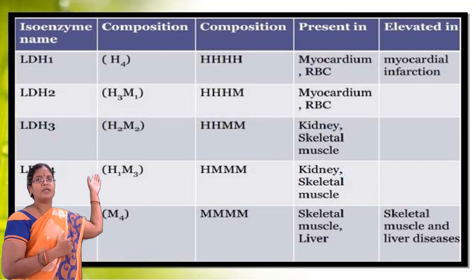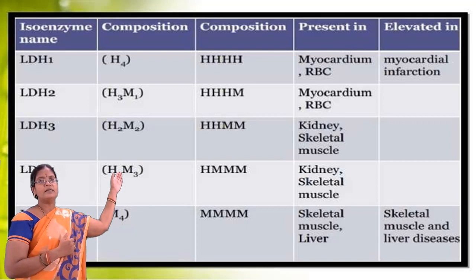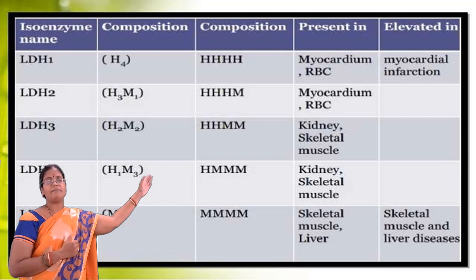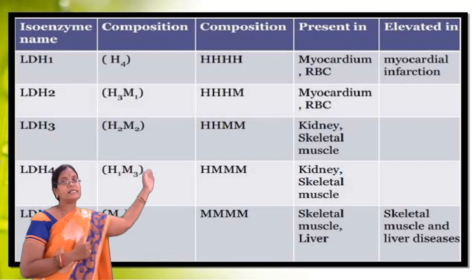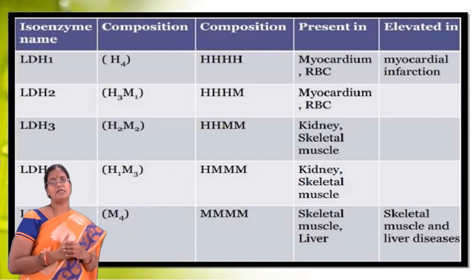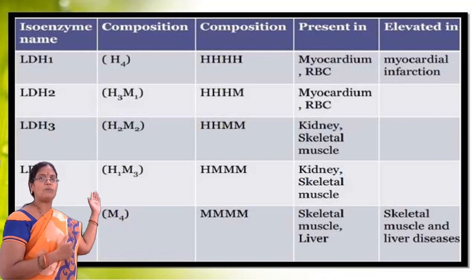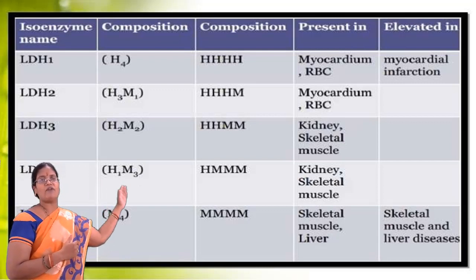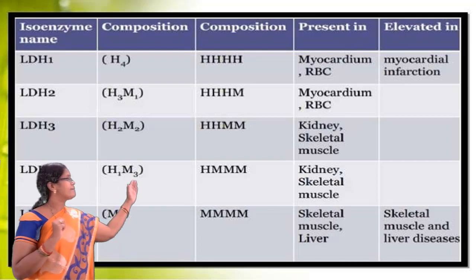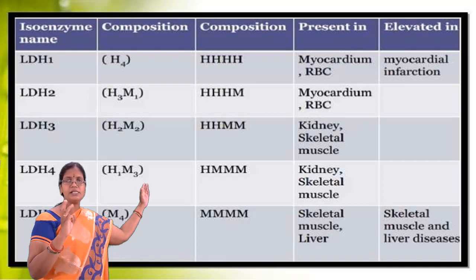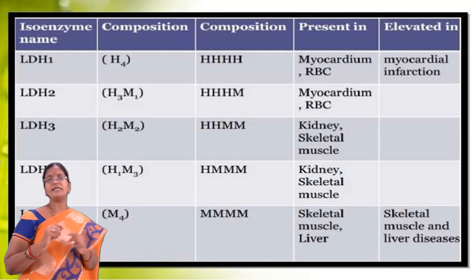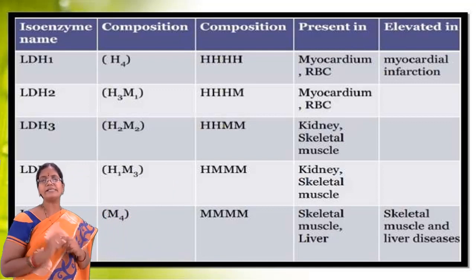This slide shows the composition, existence, and conditions in which levels are increased. LDH1 is composed of 4 heart subunits (H4) and is mainly seen in RBCs and myocardium. Its levels are increased during myocardial infarction. LDH2 is represented as H3M1 — composed of 3 heart subunits and 1 muscle subunit — and is present in myocardium and RBCs.